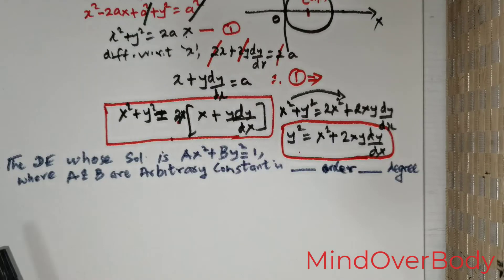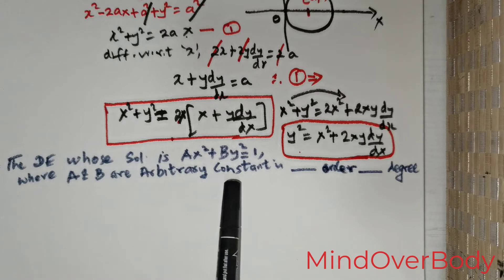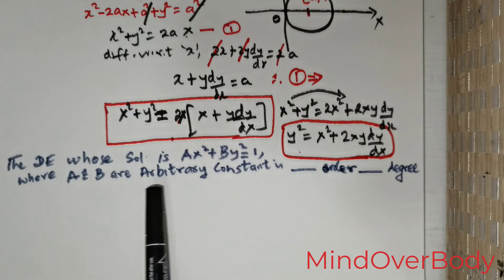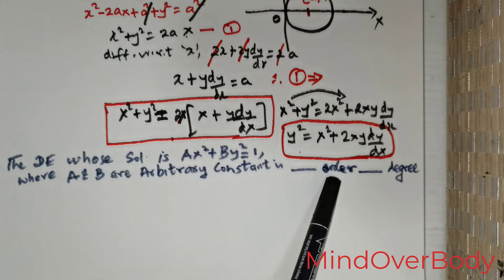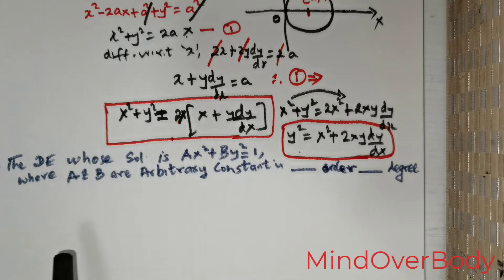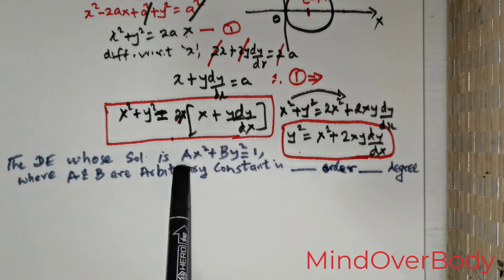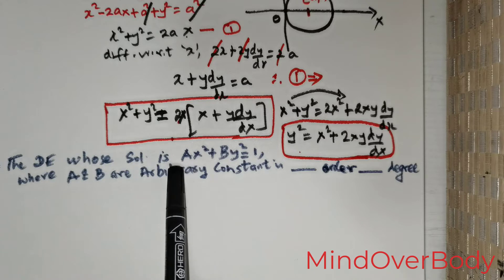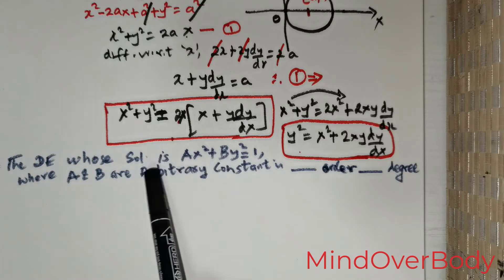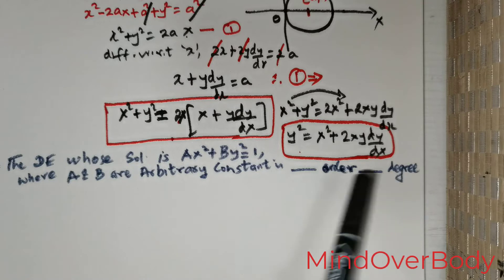We are given the differential equation whose solution is ax² + by² = 1, where a and b are arbitrary constants. We are expected to find the order and degree. The order is easily obtained: there are two arbitrary constants, so the order is 2. The only remaining question is how to obtain the degree.